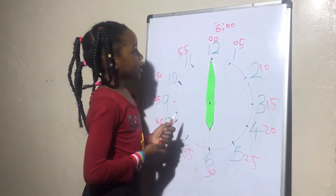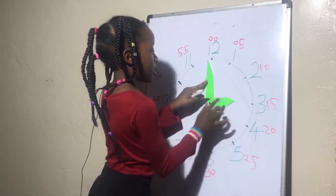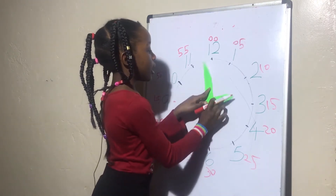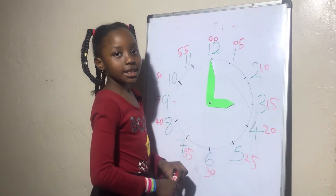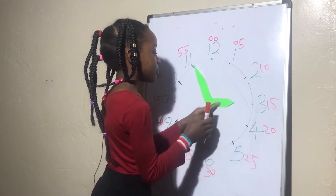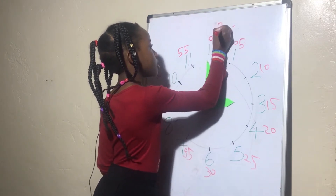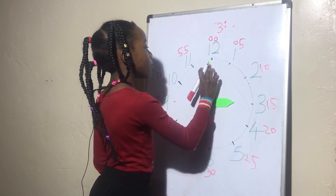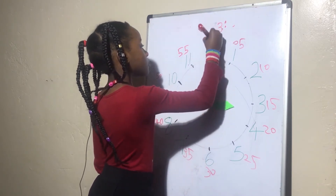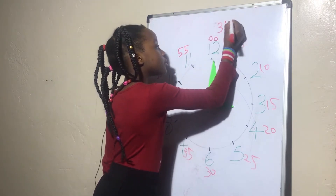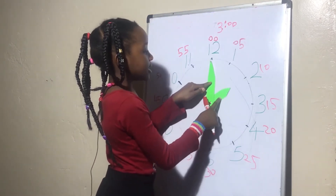Now let's tell time again. What time is it? We start by looking at where the short hand is pointing. The short hand is pointing at three, so we write three, then the two dots, then look at where the long hand is pointing, which is at 12 representing the two zeros. Now what time is it? It is 3 o'clock.